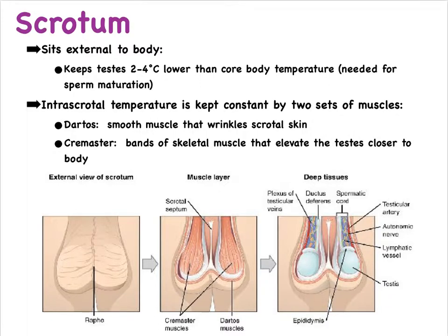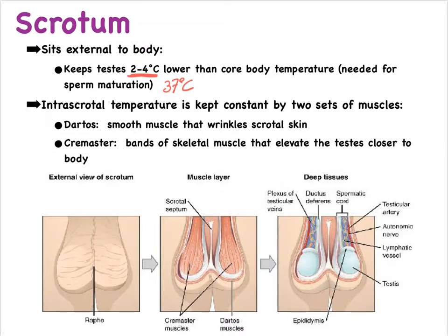There's a reason why the testes are located outside of the body in the testicles and protected in this skin-like structure called the scrotum. The reason is that spermatogenesis — the meiotic divisions that need to occur to create the haploid sperm cells — can only occur at a temperature lower than core body temperature. Normally the human body temperature is about 37 degrees Celsius, and the temperature of the testes needs to be at least two, if not four, degrees Celsius lower. So that's the prime reason why the testes need to be outside of the body. Depending on the outside temperature, the scrotum can actually bring the testes closer or farther from the body to protect the temperature of the testicles' environment.